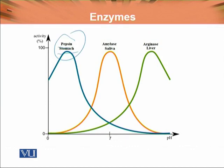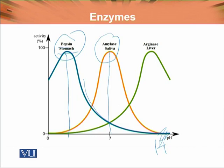This diagram shows the different enzyme activity profiles. Pepsin ki maximum activity around pH 2 hai. Agar hum pH badhate jaate hain toh uski activity reduce honi shuru ho jaati hai aur pH 14 pe bilkul zero ho jaati hai. Isi tarah salivary amylase ki jo optimum activity hai woh pH 7 pe hai. pH 7 se zyada badhane par woh bhi denature hota jaata hai aur pH 14 pe uski activity almost nil ho jaati hai. Similar is the case with arginase of the liver.